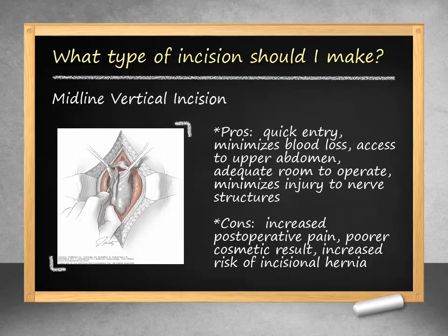The patient is positioned and prepped and we are ready to begin our surgery. We must first consider how we plan to enter the abdomen. The first option is a vertical entry, which we will go through in detail later. The benefits of this entry are that it is quick, minimizes blood loss, allows extension and access to the upper abdomen, and provides adequate operative space. The disadvantages of this technique are increased postoperative pain, poor cosmetic result, and increased risk of hernia.